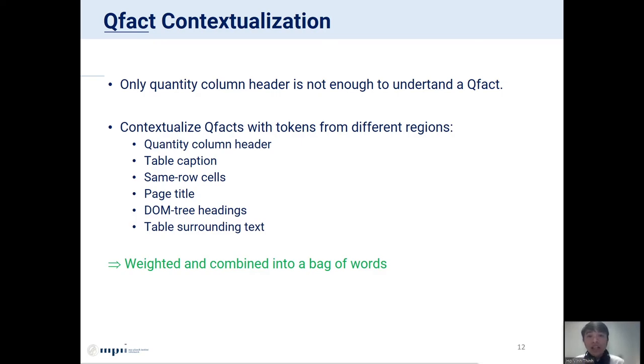An important step after extracting QFacts is QFact contextualization. The problem is that sometimes we cannot fully understand a QFact with only the quantity column header in the QFact context. So, in this step, we basically contextualize the QFact with not only the quantity column header, but also with other components of the table. For example, the table caption, the cells on the same row, page title, DOM tree headings, and the text surrounding the table. These components are weighted and combined together into a bag of words.